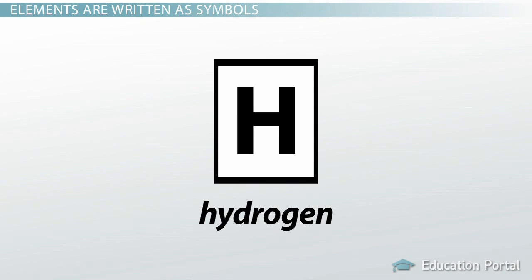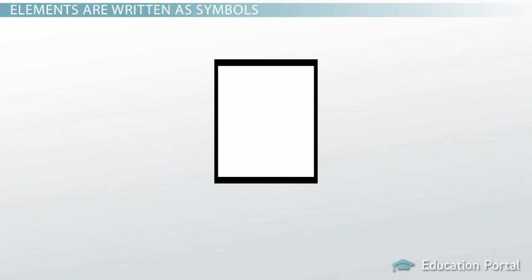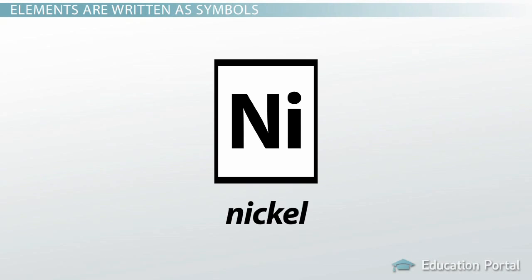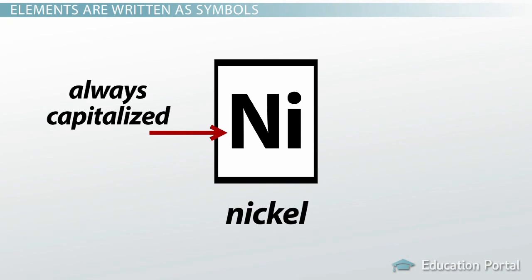Not all elements have just one letter as a symbol, but have two letters. Like, AL is a symbol for aluminum, and NI is a symbol for nickel. The first letter is always capitalized, but the second letter is not.